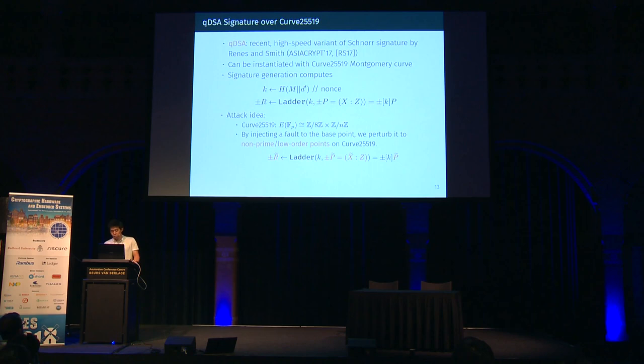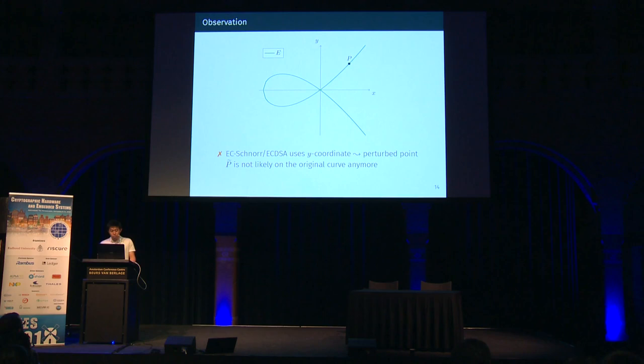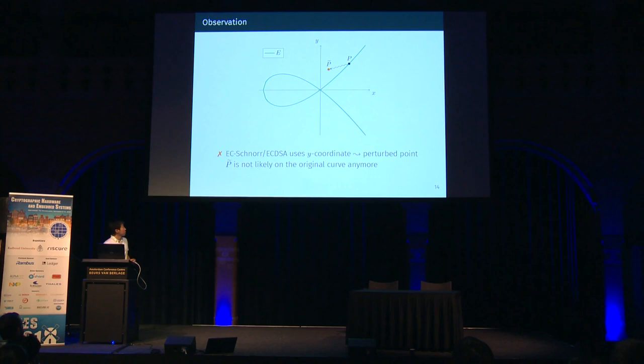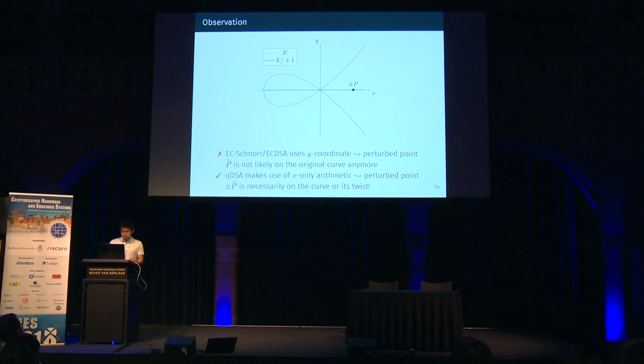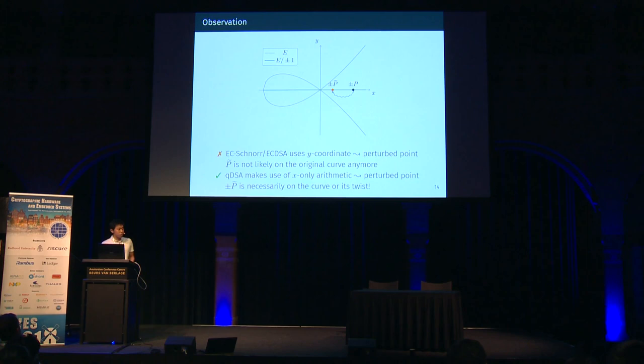Here is our fundamental observation on why the attack works against QDSA. If we attack EC-Schnorr or EC-DSA, since they use the Y-coordinate, a perturbed point is not likely on the original curve anymore — so our fault attacks wouldn't make sense against such schemes. On the other hand, since QDSA uses X-only arithmetic and does not involve the Y-coordinate, the perturbed point P-tilde is necessarily on the curve itself or its twist. Even after injecting a fault, we can still confidently make use of the structure of the underlying original curve.